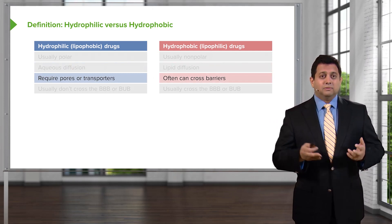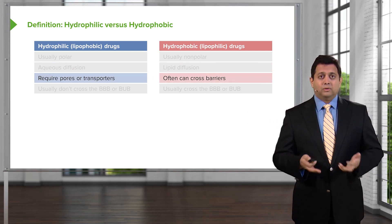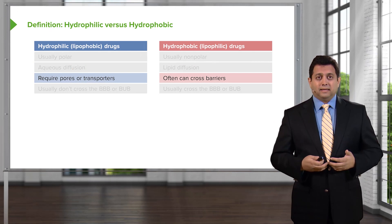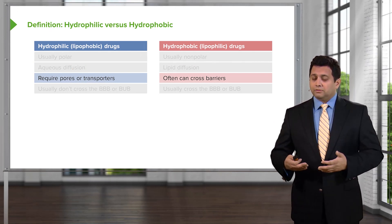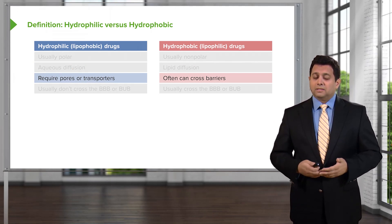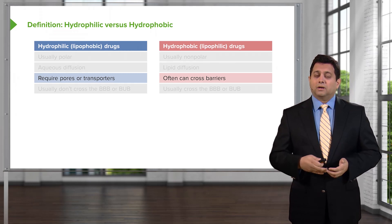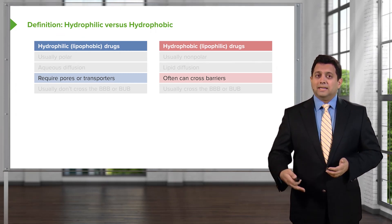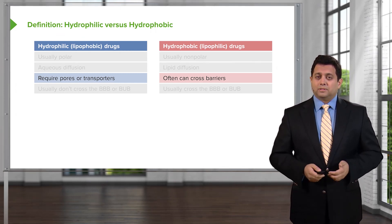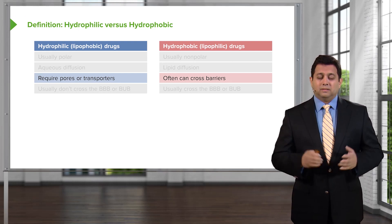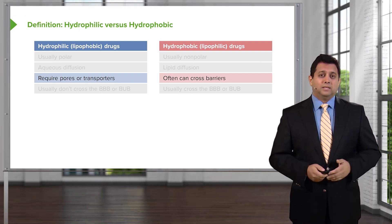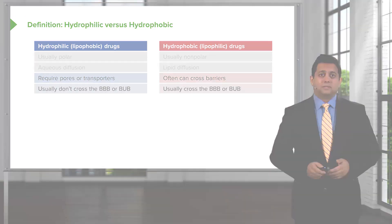Hydrophilic drugs need a pore or a transporter to get across the lipid bilayer. Hydrophobic drugs, or lipophilic drugs, often can cross barriers without the need of pores or transporters. This is an important distinguishing feature between these two types of drugs.